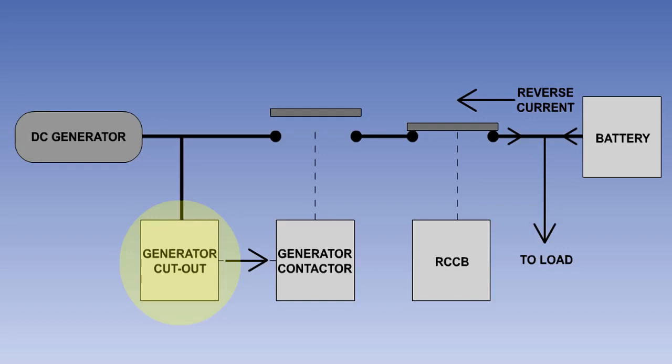In order not to interfere with this process, the reverse current required to operate a reverse current circuit breaker is high, usually more than 200 amperes.